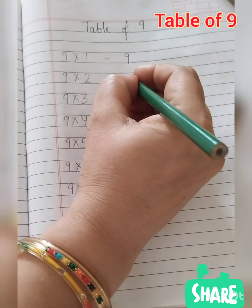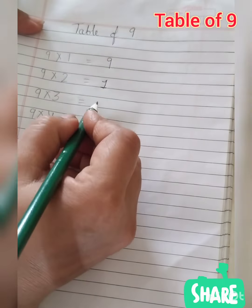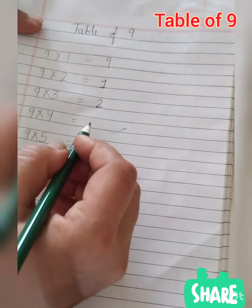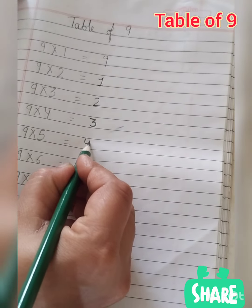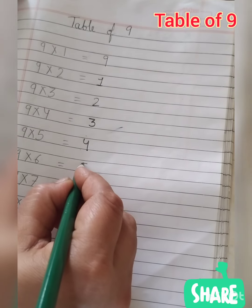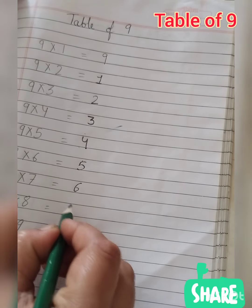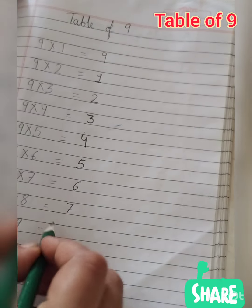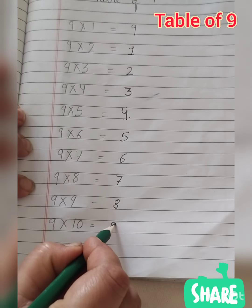Then we will write 1, then we will write 2, then we will write 3, then we will write 4, then we will write 5, then we will write 6, then 7, then 8, then we will write 9.